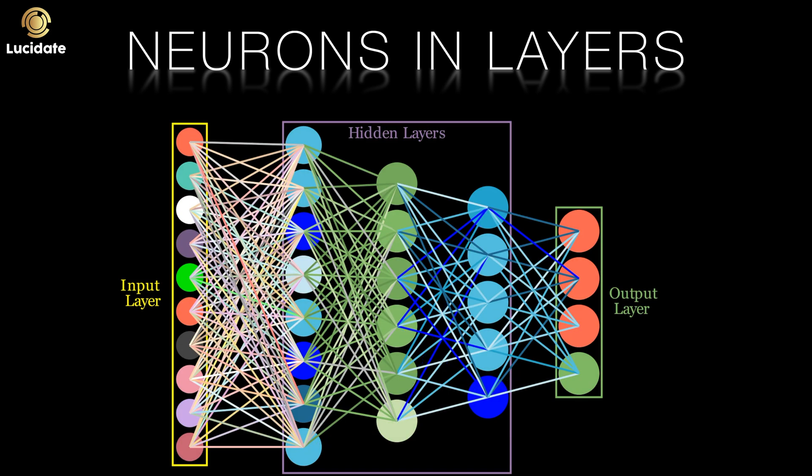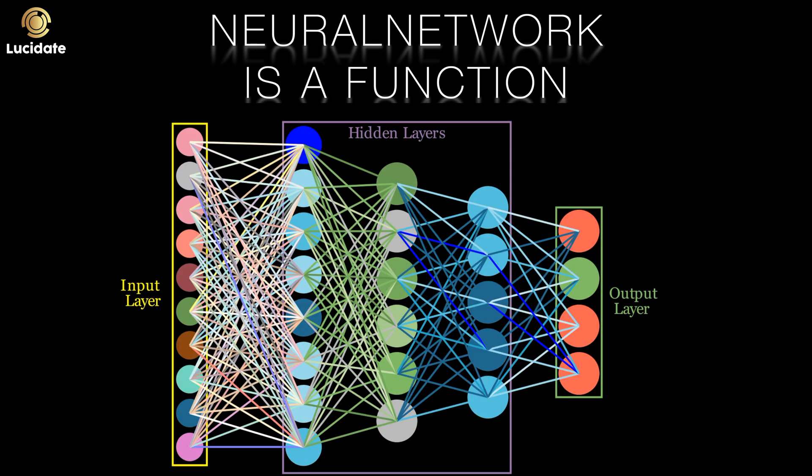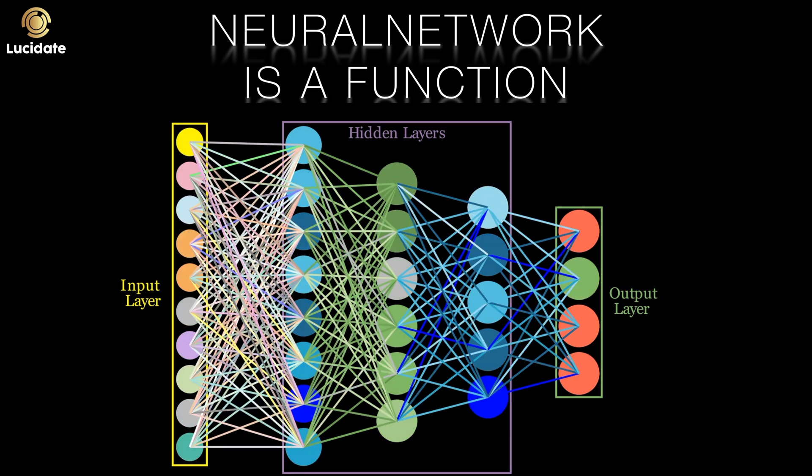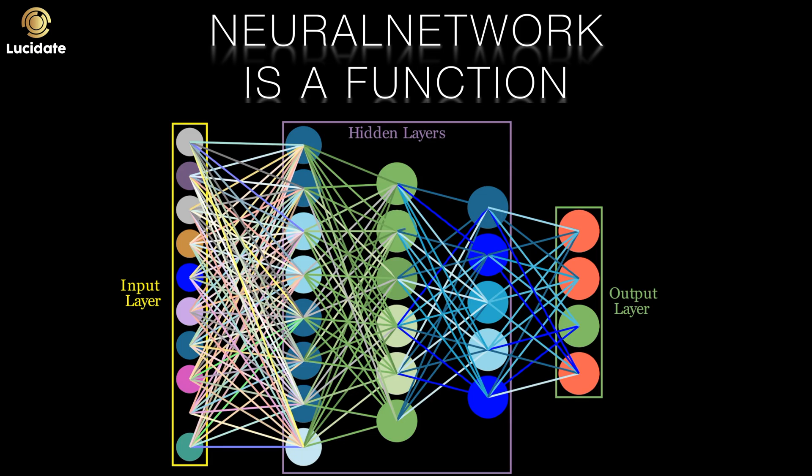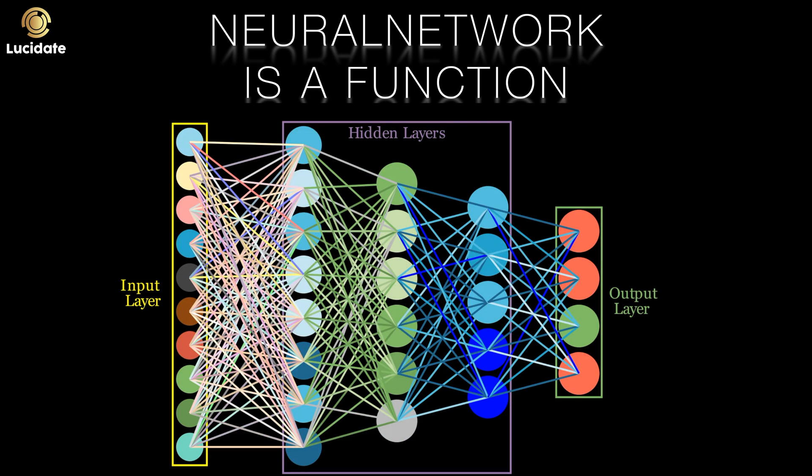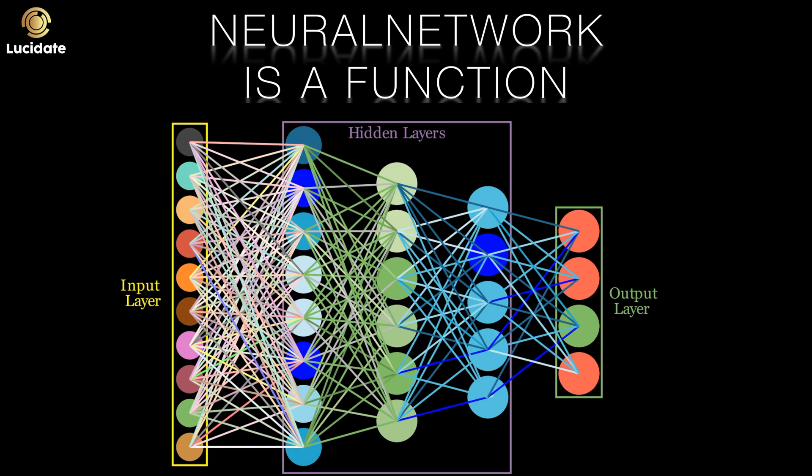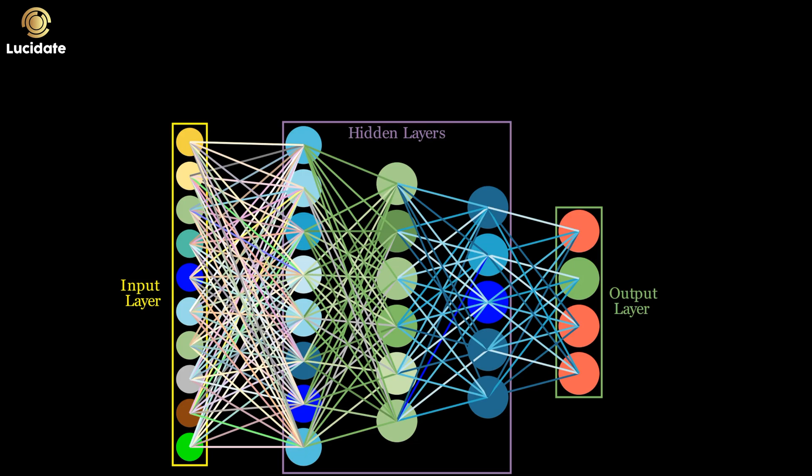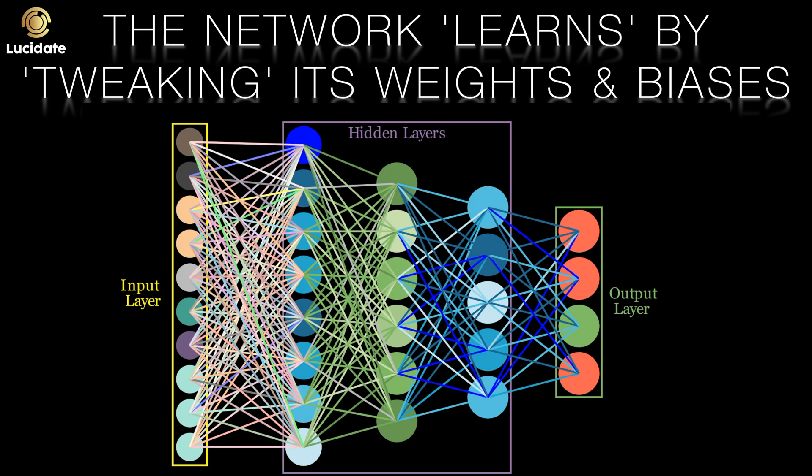In the third post we also suggested that a neural network could be regarded as a function. Yes, a crazily complicated function but a function nonetheless. It has a bunch of inputs and a bunch of outputs. Crucially it has a large number of parameters named weights and biases. It's these weights and biases in each neuron that we can tweak. This tweaking is what allows the network to learn a pattern or a mapping between inputs and outputs.